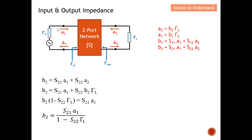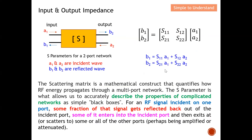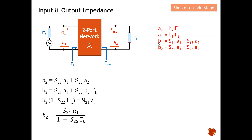In this two-port network, the incident waves are described by a1 and a2, and the reflected waves are described by b1 and b2. This will be the input reflection coefficient, this will be the output reflection coefficient, this will be the load, and this will be the source. This set of four equations is obtained from the two-port network equations discussed in part 2 and the power wave relationships — I've highlighted them in red for reference.